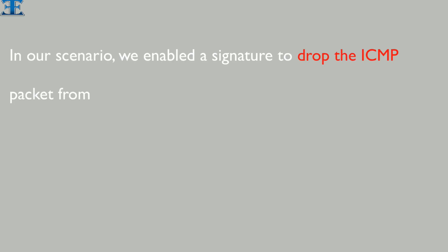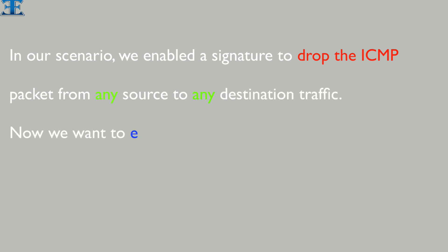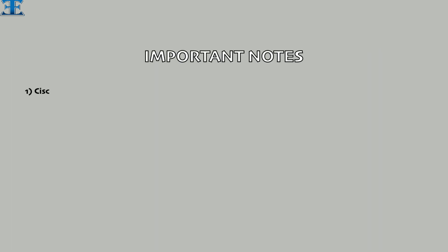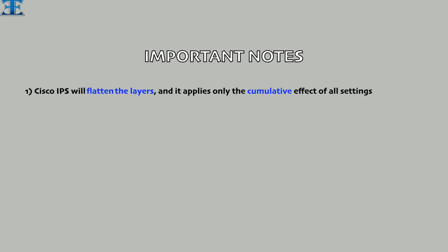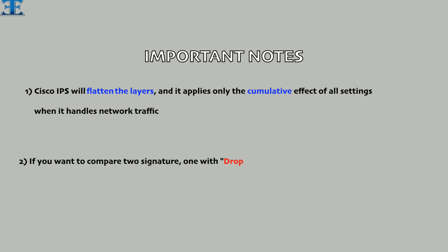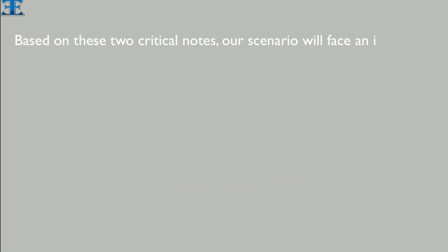Now I want to create an exemption for our ICMP rule. Based on our scenario, we enabled a signature to drop the ICMP packet from any source to any destination. Now we want to exempt this ICMP drop signature for specific traffic. Before continuing, we need to know two important notes. Key point number one: Cisco IPS will flatten the intrusion policy layers and applies only the cumulative effect of all settings when it handles network traffic. Key point number two: if you compare two signatures — one with drop action and the other with generate event action — drop has priority.